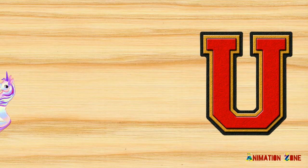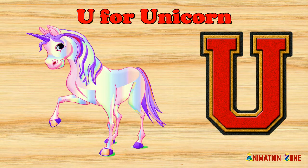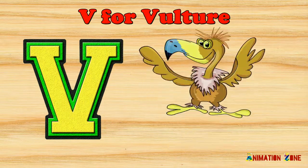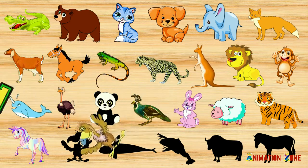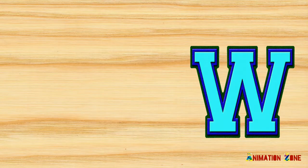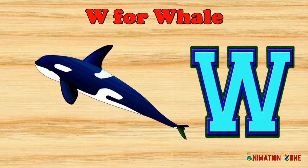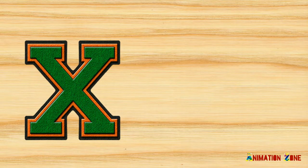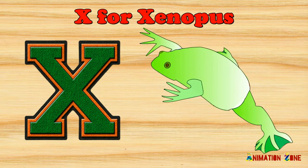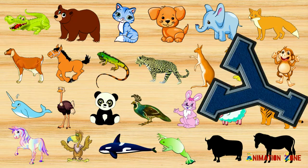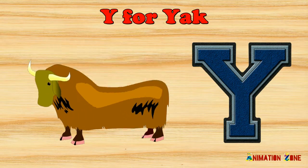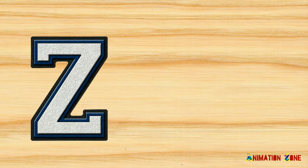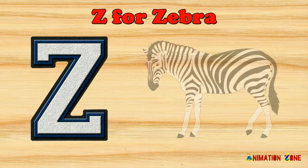U. U for unicorn. V. V for vulture. W. W for whale. X. X for xenopus. Y. Y for yak. Z. Z for zebra.